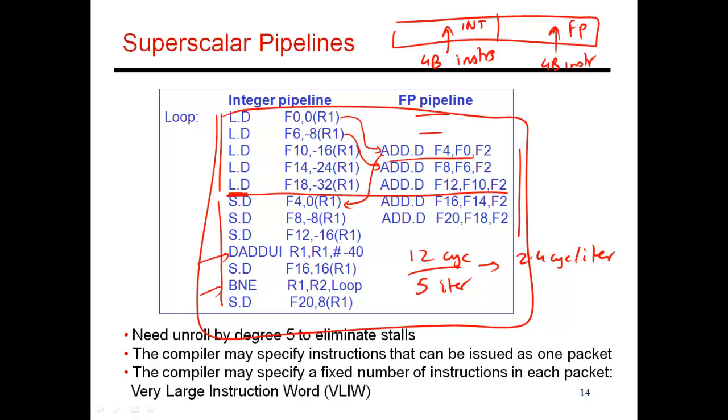This becomes my very large instruction word, and it is very explicit about what needs to be done in every single pipeline. There are some cycles where the floating point pipeline is idle. In those cases, you would put in a no-op over here, which again will consume four bytes. This is not the most efficient in terms of code size, but it keeps the hardware simple because there are these very explicit instructions to the pipeline or to the hardware about what needs to happen every cycle.